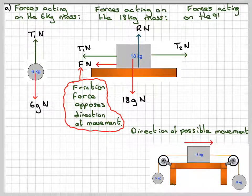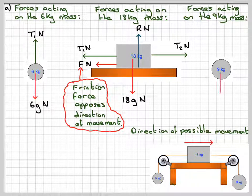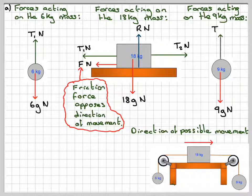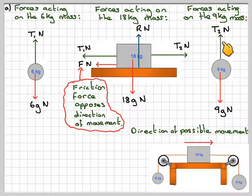So the forces acting on the 9 kilogram mass. We're going to have the weight of the mass, which is 9G N, and then the tension, T2N, which is going to be the same tension here. Here and here, we have the same tension.